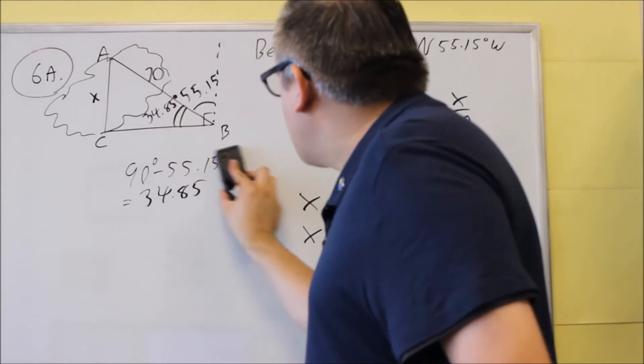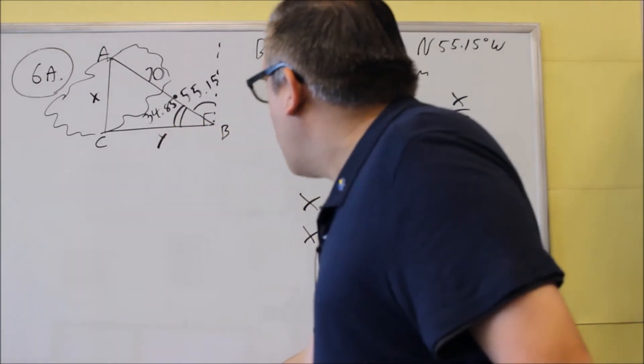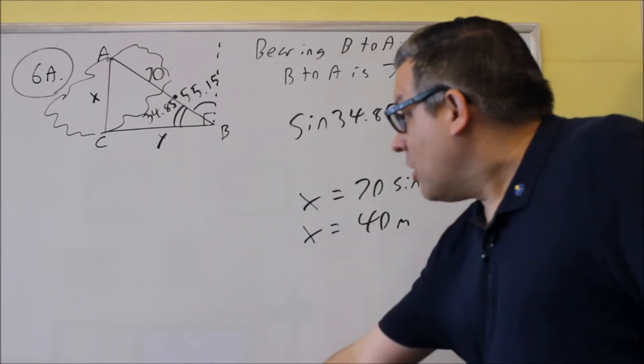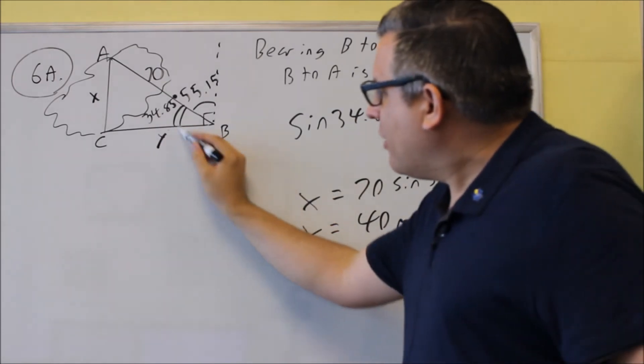So let me erase this because we already know that that angle inside is 34.85. I'll just call that one Y. And we're going to set up another trig function based on that. Now we already used sine before. Now this time we want to find this one.